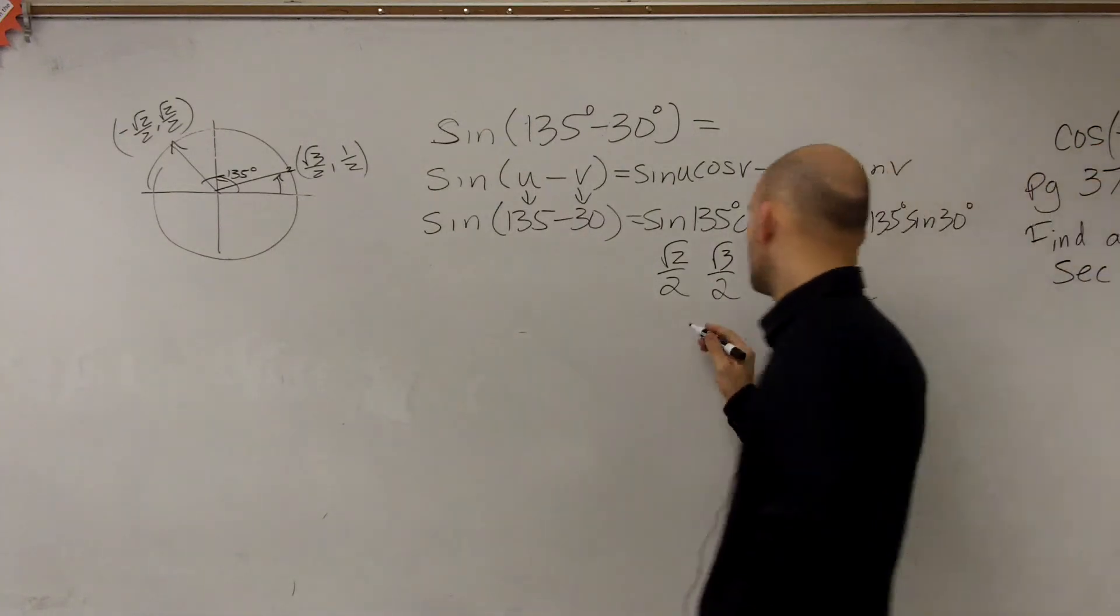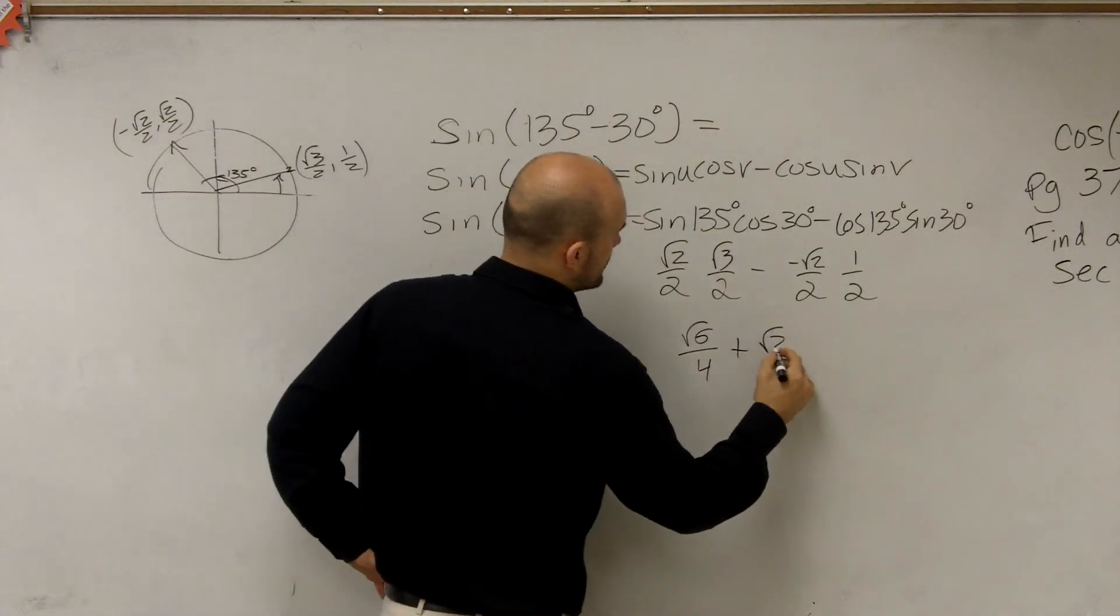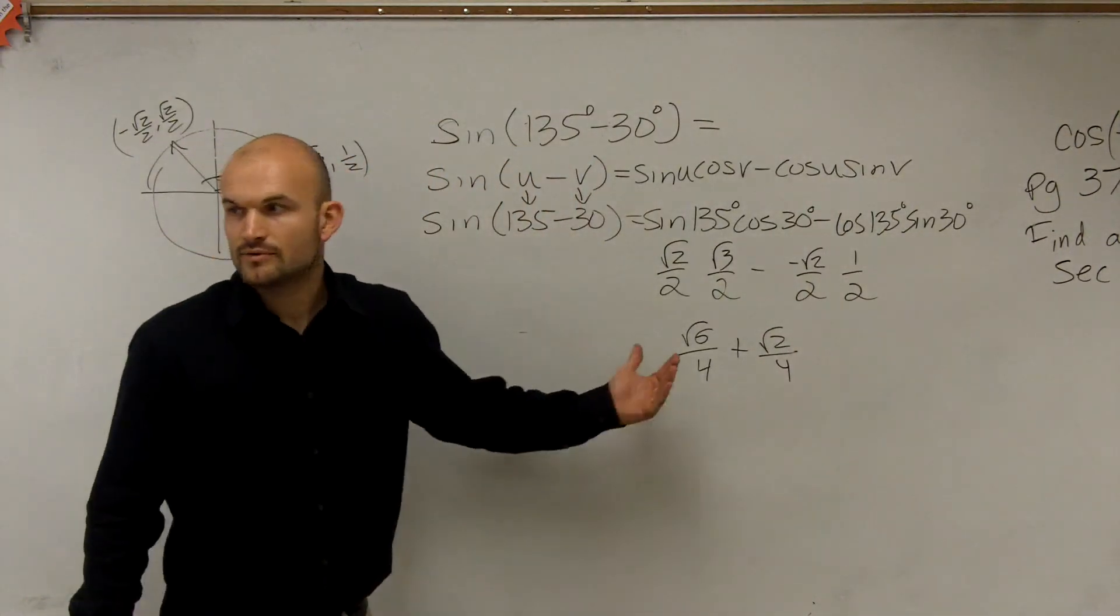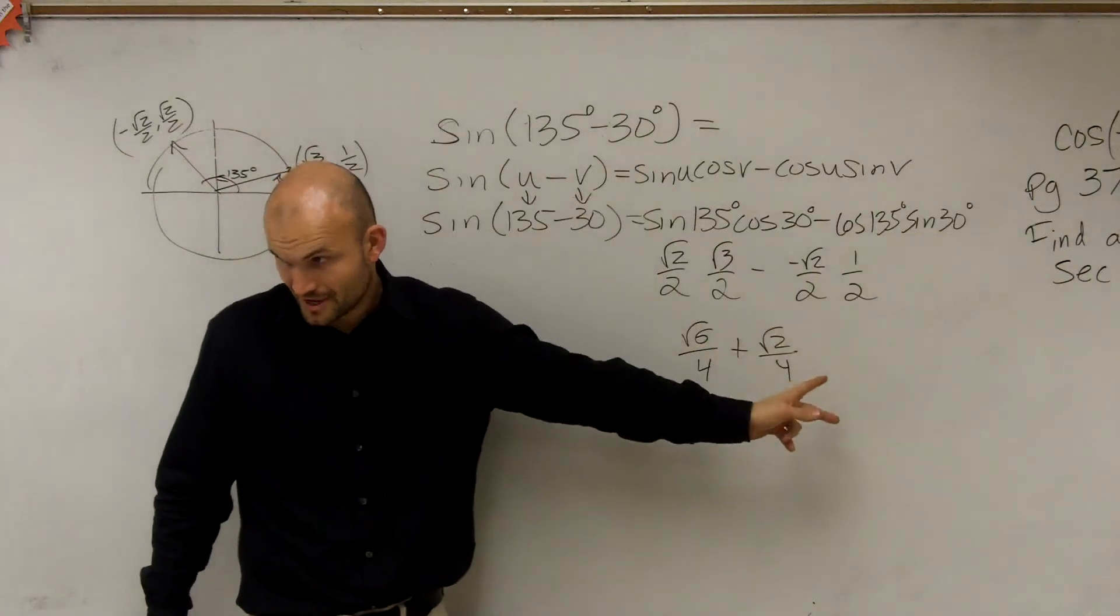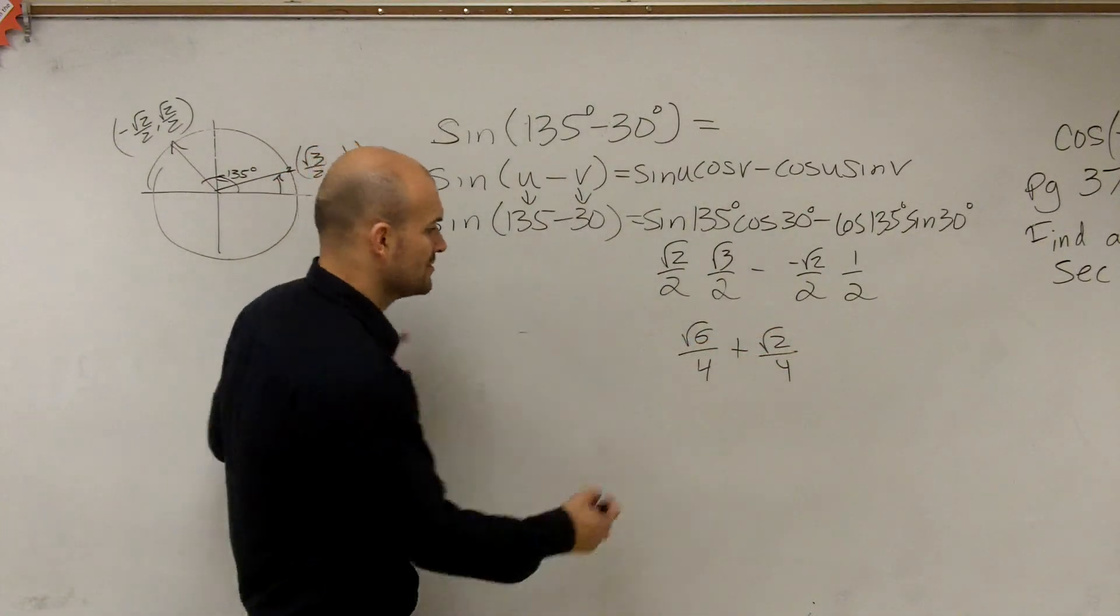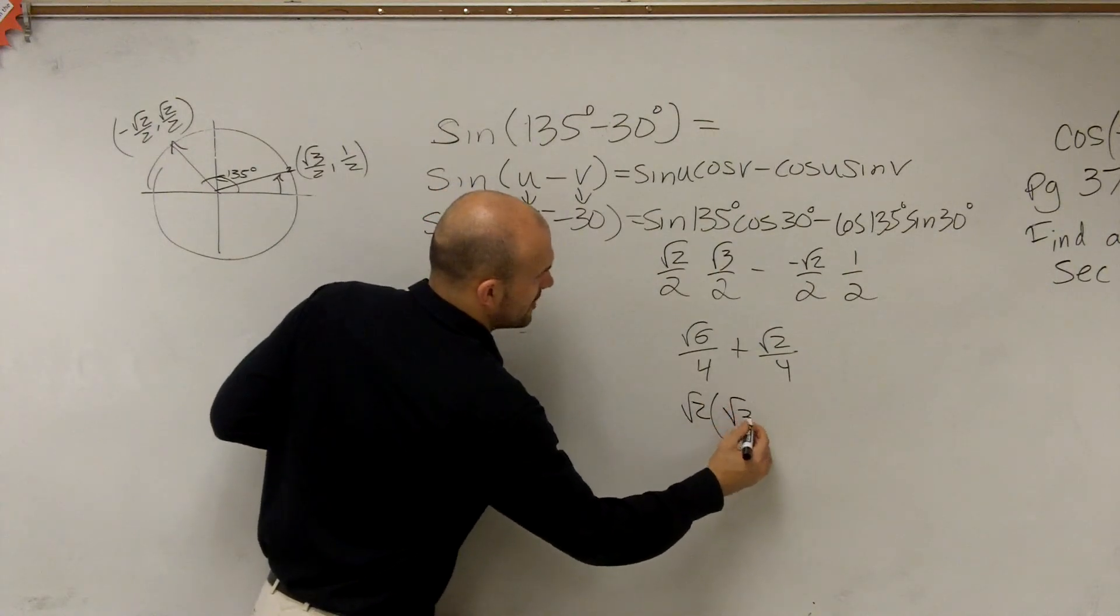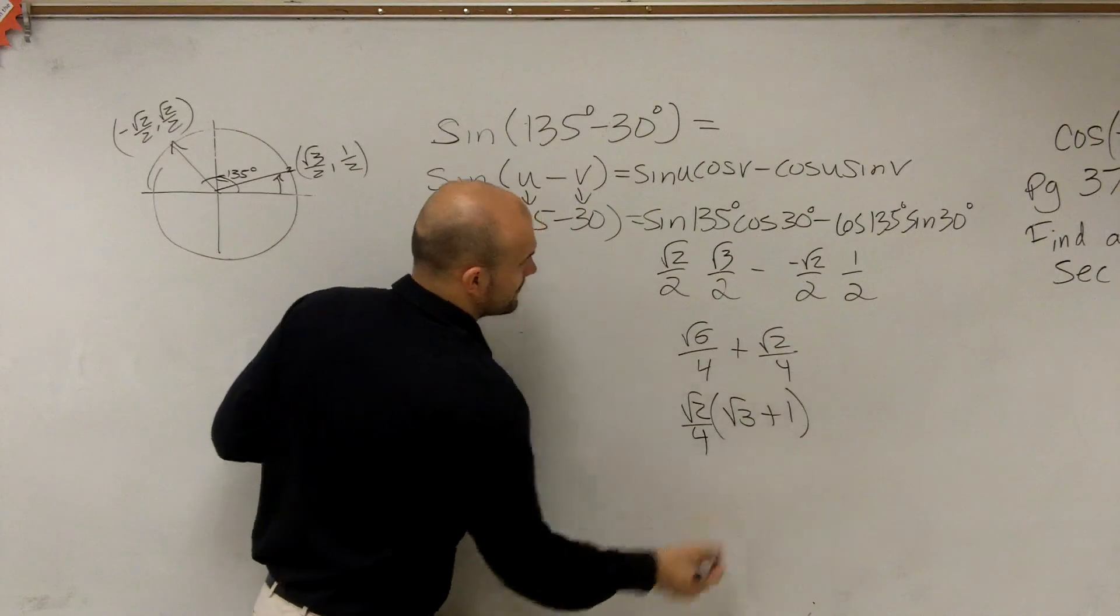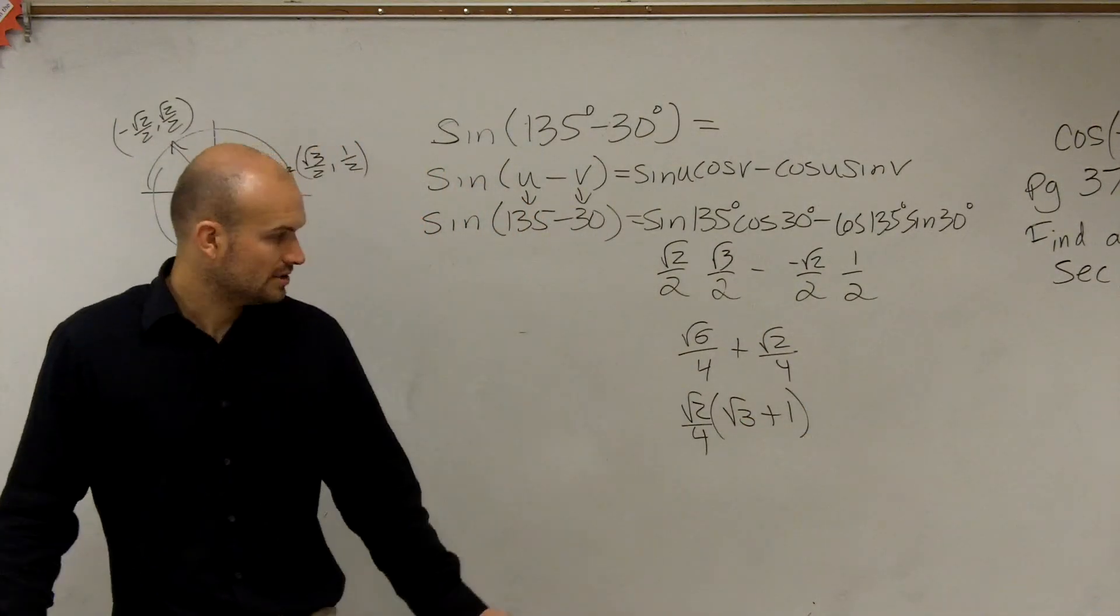Now we multiply across. Square root of 6 over 4 plus the square root of 2 over 4. Then we factor out the common term. Since they both share a 4 and they both share a square root of 2, you can now factor out a square root of 2, leaving you with the square root of 3 plus 1. Factor out a square root of 2 over 4. So it's going to be the square root of 2 divided by 4 times the square root of 3 plus 1.